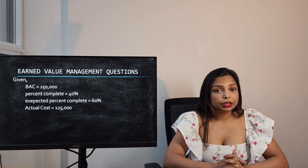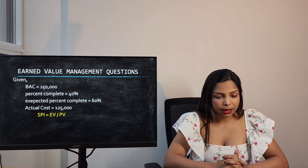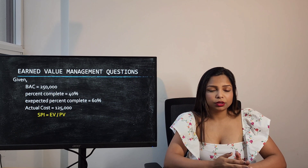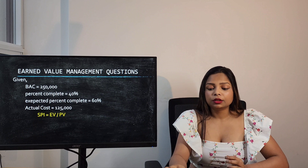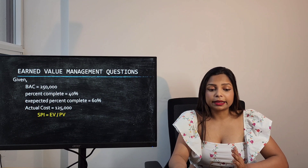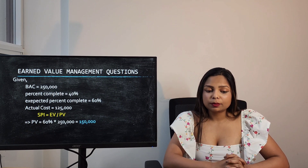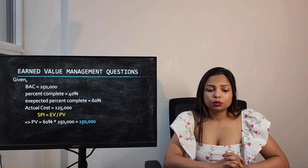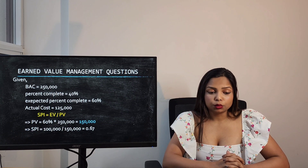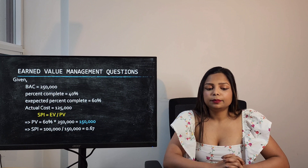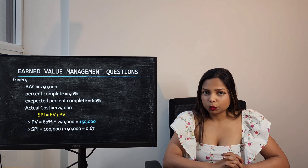To calculate the Schedule Performance Index, the formula is Earned Value divided by Planned Value. Earned Value is already calculated as $100,000. Planned Value is 60% multiplied by $250,000, which equals $150,000. Dividing $100,000 by $150,000 gives an SPI of 0.67.